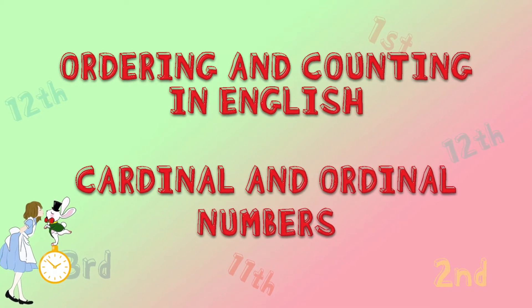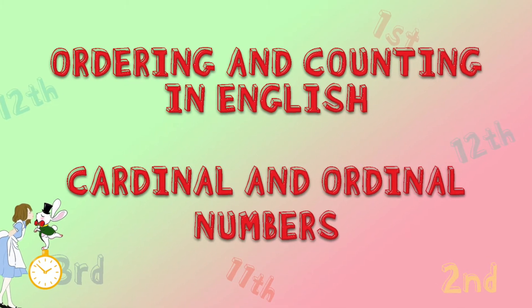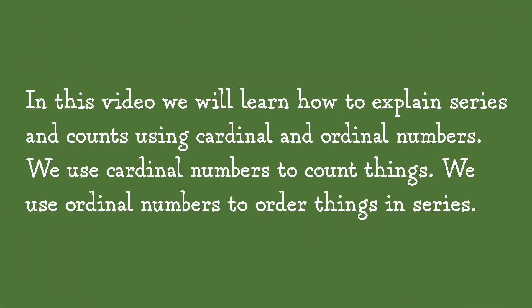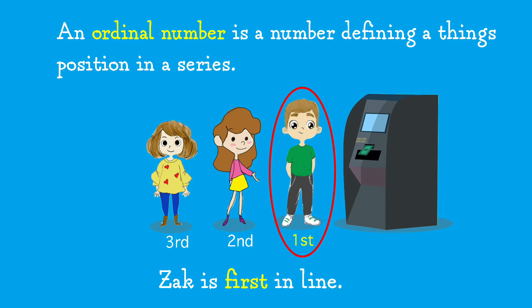Ordering and counting in English: cardinal and ordinal numbers. In this video, we will learn how to explain series and counts using cardinal and ordinal numbers. We use cardinal numbers to count things. We use ordinal numbers to order things in series. An ordinal number is a number defining a thing's position in a series.